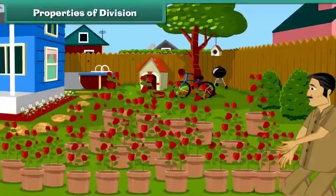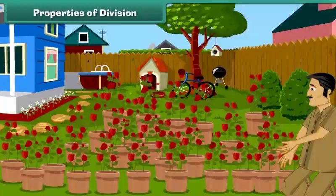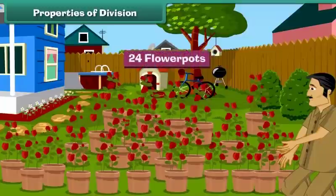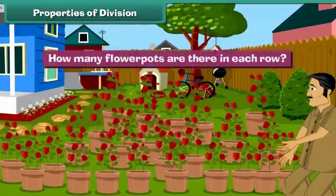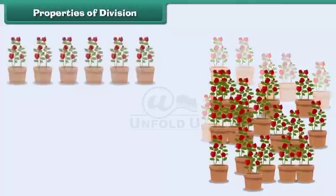Division is the reverse of multiplication. It is repeated subtraction. Look at this picture: there are 24 flower pots in the garden. The gardener has arranged the flower pots in 4 rows. How many flower pots are there in each row?